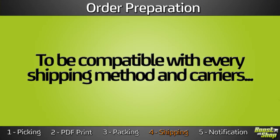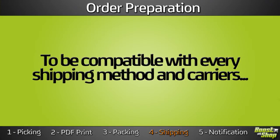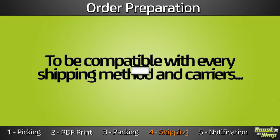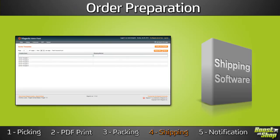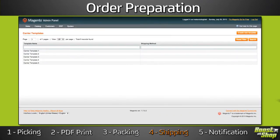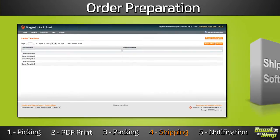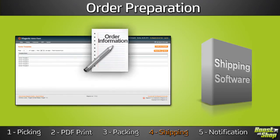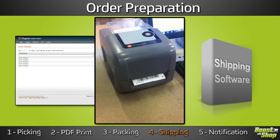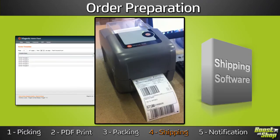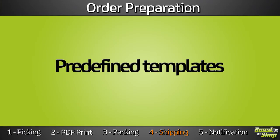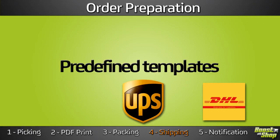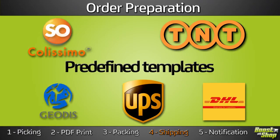Shipping. To be compatible with every shipping method and carrier, ERP includes a wizard to set up communication between Magento and your shipping software. With this wizard, you can configure the streams exporting order information to the shipping software to print the shipping labels, but also the incoming stream to import tracking numbers to Magento. We already provide predefined templates to work with UPS, DHL, Colesimo, TNT, and GeoDIS.